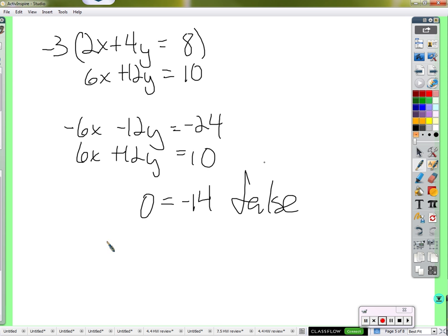So since this is a false statement, we have no solution. And again, that's because, take a look at what we have here. We have 6x plus 12y equals 10. If I multiply both sides of this equation by negative 1, I'll get negative 6x minus 12y equals negative 10. If I multiply both sides of this equation by 3, I'll get 6x plus 12y equals 24. How could 6x plus 12y equal 10 and 6x plus 12y also equal 24 at the same time?